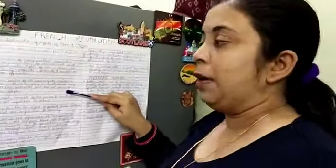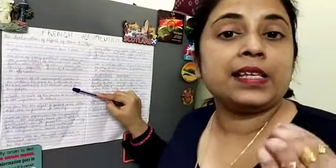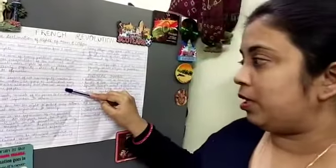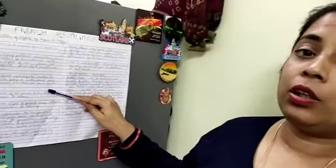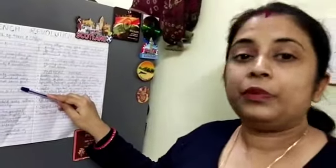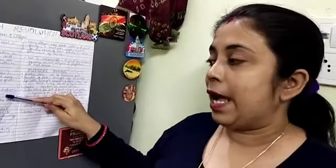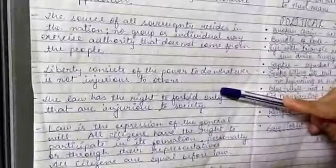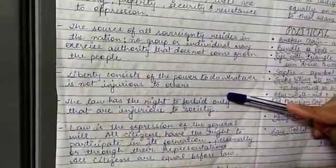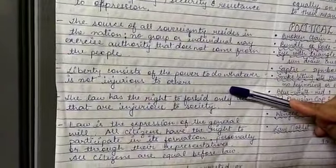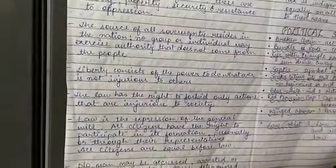No group or individual may exercise authority that does not come from the people. Next, liberty consists of the power to do whatever is not injurious to others.